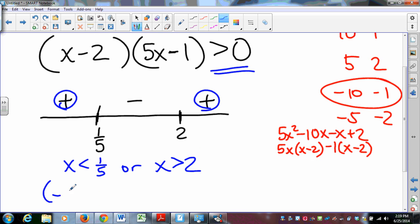Some people write this in interval notation. This interval runs from negative infinity to 1/5, where 1/5 is not included. This interval runs from 2 to infinity, where 2 is not included. Infinity is never included, because infinity is not a number.